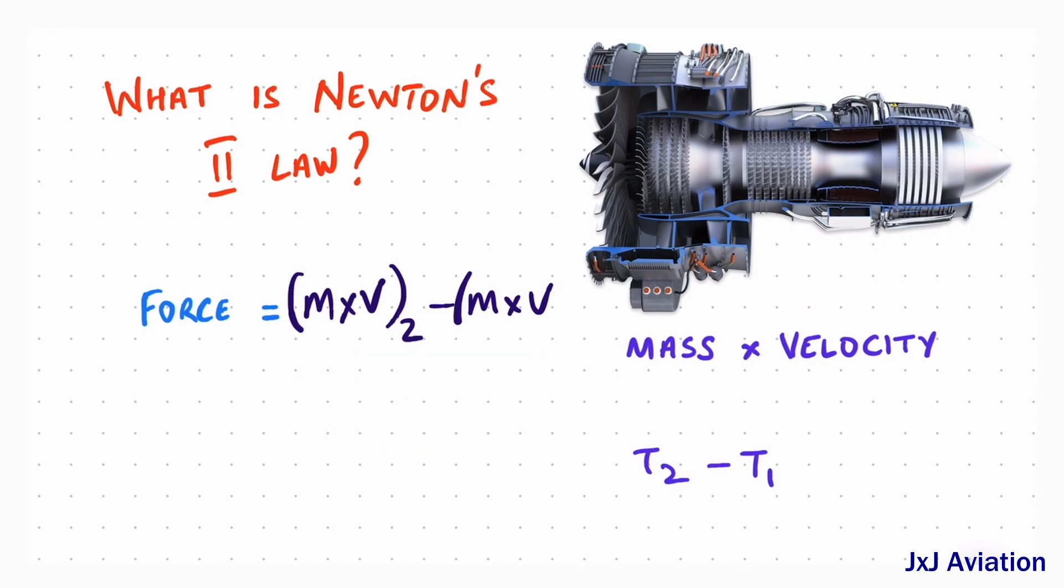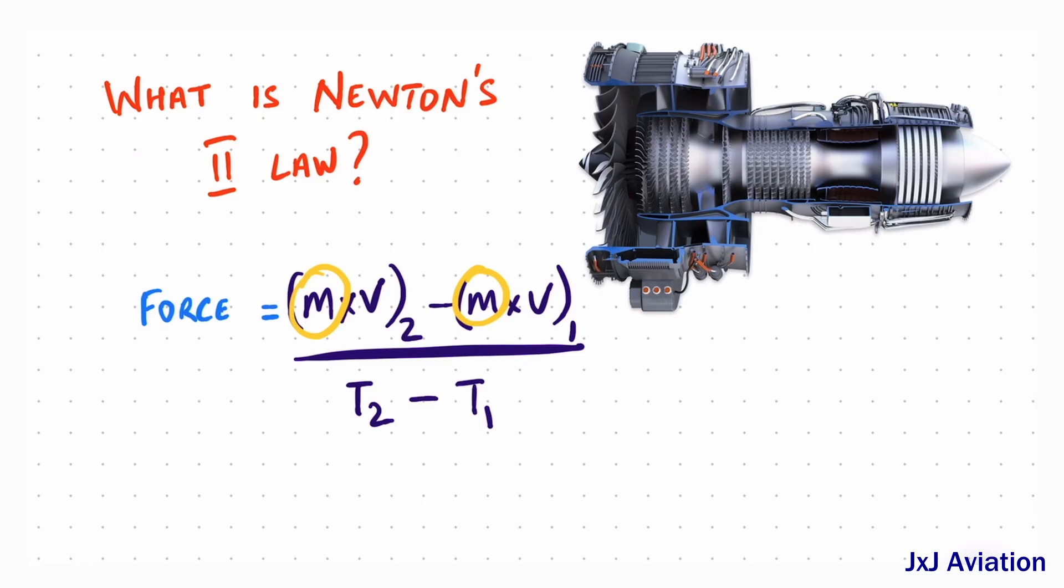For a mass moving from 1 to 2, the force can be written like this. In this equation, if the mass is constant and only the velocity changes with time, a simple force equation is obtained, which is mass times acceleration.